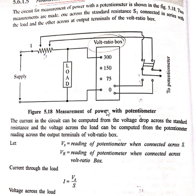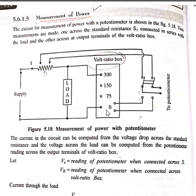In this lecture we have seen the application of DC potentiometer for measurement of resistance and for measurement of power. In the next lecture we will see the application of AC potentiometer for measurement of self inductance, and also one more application of DC potentiometer — calibration of wattmeter. Thank you, I am ending this lecture here. Continue with the lectures, stay healthy and stay safe.